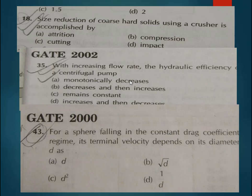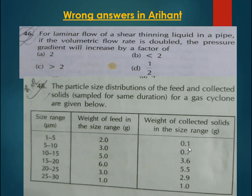Question 43, asked in GATE 2000: the answer given is C while the correct answer is B, as also given in M. Subdu. The reason is that if drag coefficient is given as constant, the flow is in the turbulent regime. In turbulent regime, the terminal velocity is proportional to the square root of D, while the answer given corresponds to laminar flow, which is wrong. Question 46, asked in GATE 2000: the answer given is A while correct answer is B. This is a shear-thinning liquid, which is a non-Newtonian fluid, and for non-Newtonian fluids the viscosity is not constant — it changes with velocity.